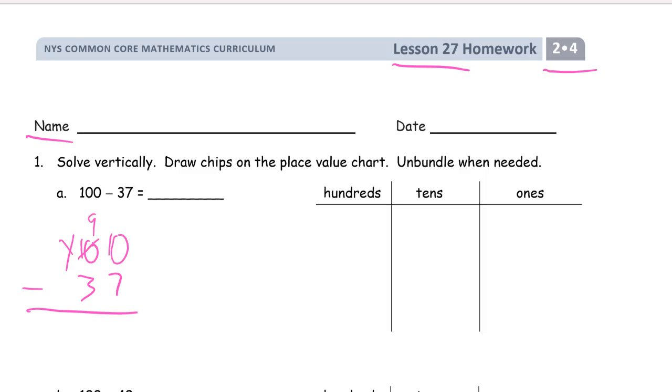Over here on the place value chart, here's what it looks like. It's a little bit easier here because you can see all you have is that 100. So you have to unbundle it. That's all you have to work with.